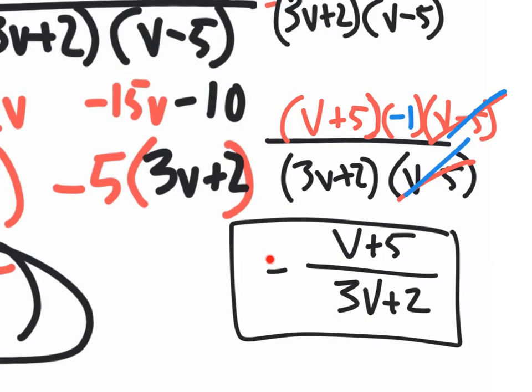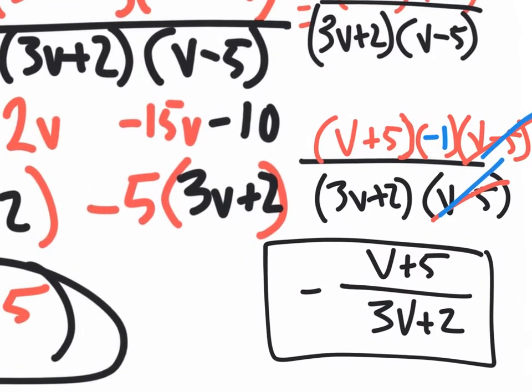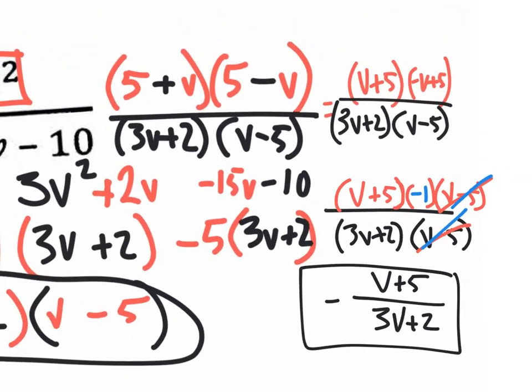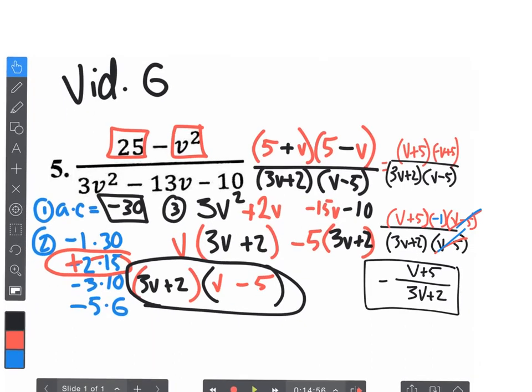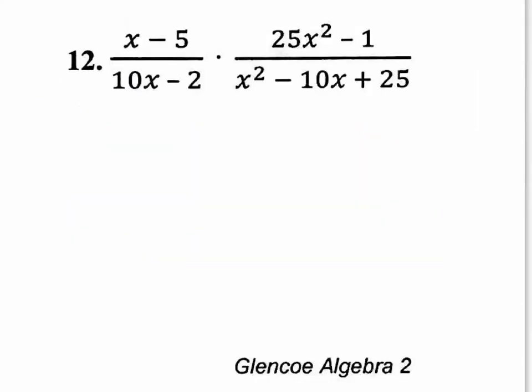Or you could have taken that negative sign and obviously changed both of these up here if you wanted to. But that's your final answer for that one — that was number 5. Let's jump to number 12, the last one on the bottom part of the first page. Let's factor anything possible.